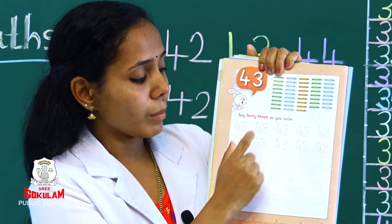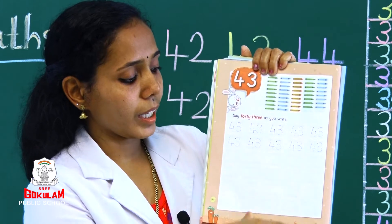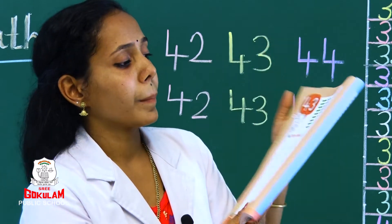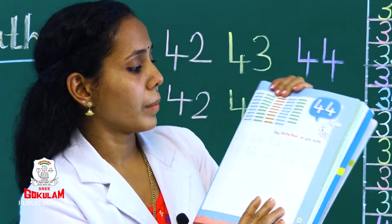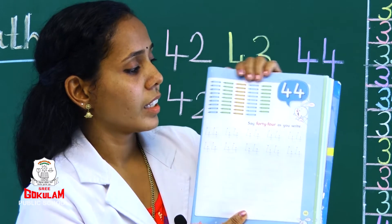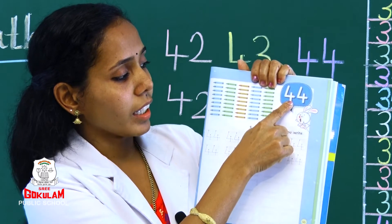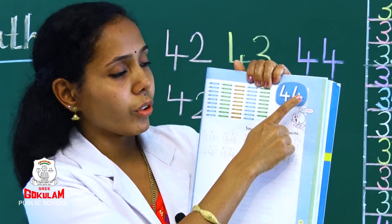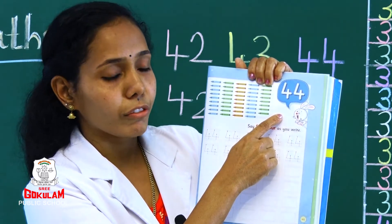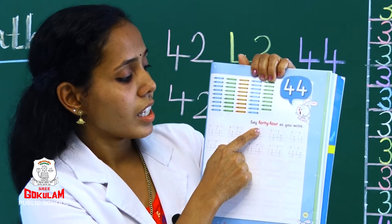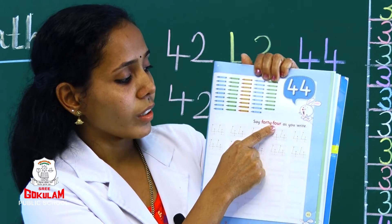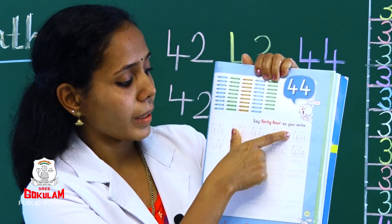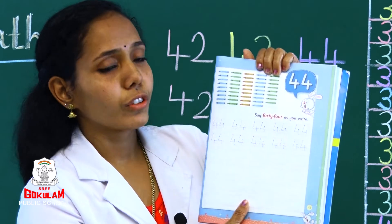Trace the dot numbers in the box. Next number 44: 4, 4, 44. Say 44 as you write: 44.